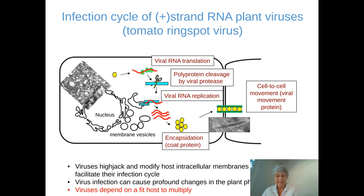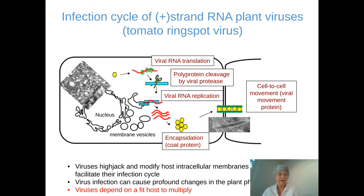A few points I want to make about this replication cycle: first, viruses hijack and modify host intracellular membranes and proteins to facilitate their infection, so they're completely dependent on their host. Also, virus infection can cause profound changes in the plant physiology, and that can be one of the causes of visible symptoms in the disease. Perhaps most importantly, viruses depend on a fit host to multiply, so if the host is too damaged, that will also hinder the virus infection cycle.